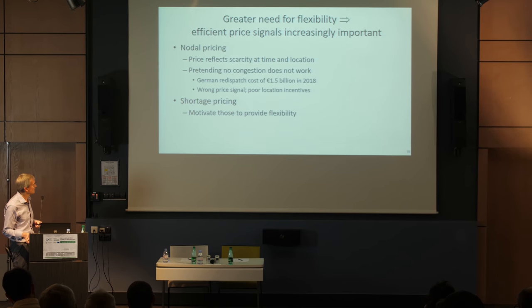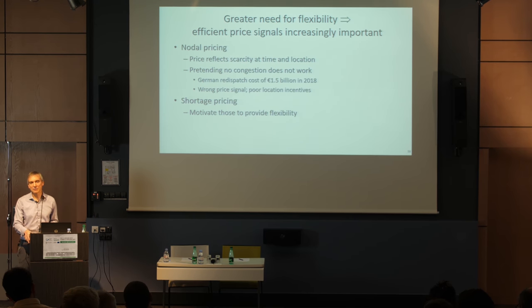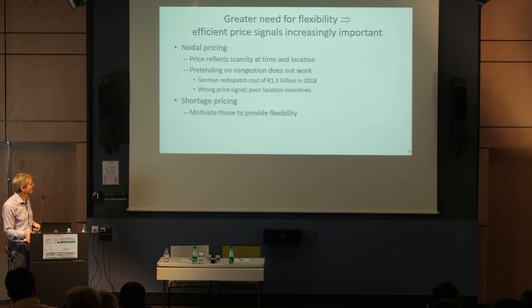I remember many years ago when Texas was debating nodal — they had a zonal system and said that when redispatch cost got up to $25 million they'd switch to nodal. Germany's costs are dramatically higher than that. Texas is about the same size as Germany electrically. Shortage pricing is going to be increasingly important as well — that's what will give storage units the reward they need and motivate the 100 megawatt per minute ramping rate of the combined-cycle plants.